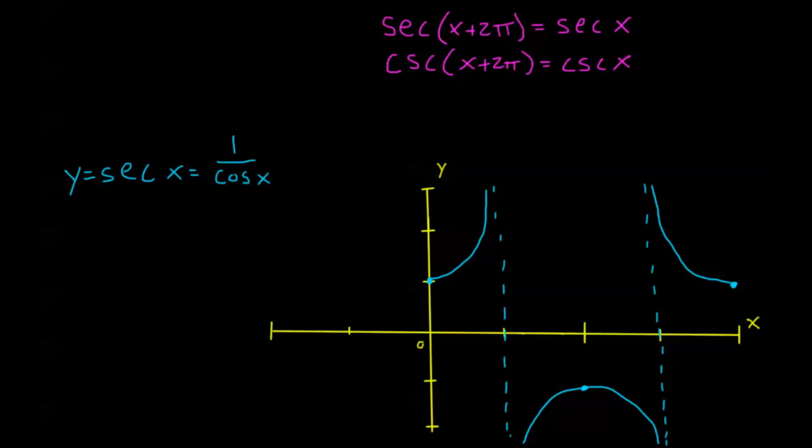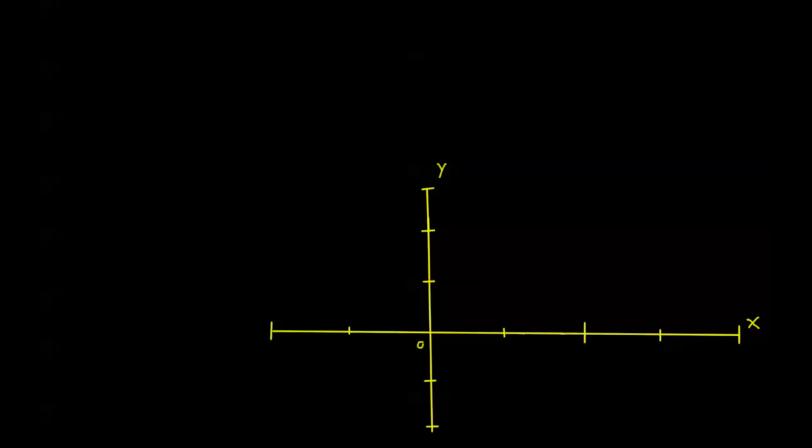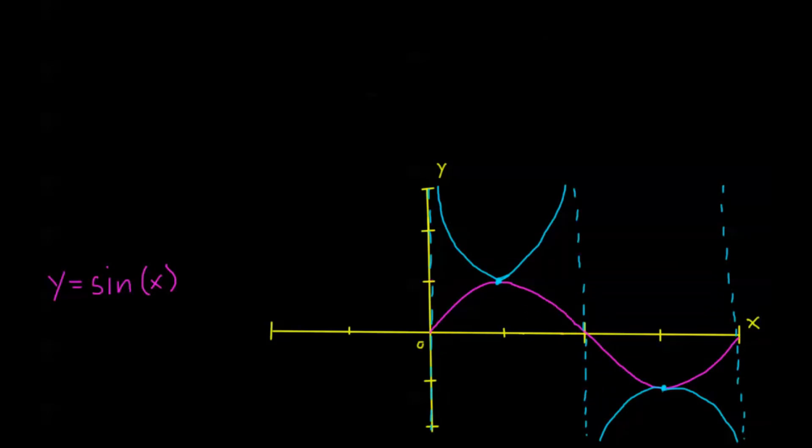And one more time, I'll bring back cosecant up so you can see the difference. This is secant. This is cosecant. Just like with sine and cosine, they look similar, but it looks like they kind of start just off of each other. And that's true. That's pretty much what's happening.